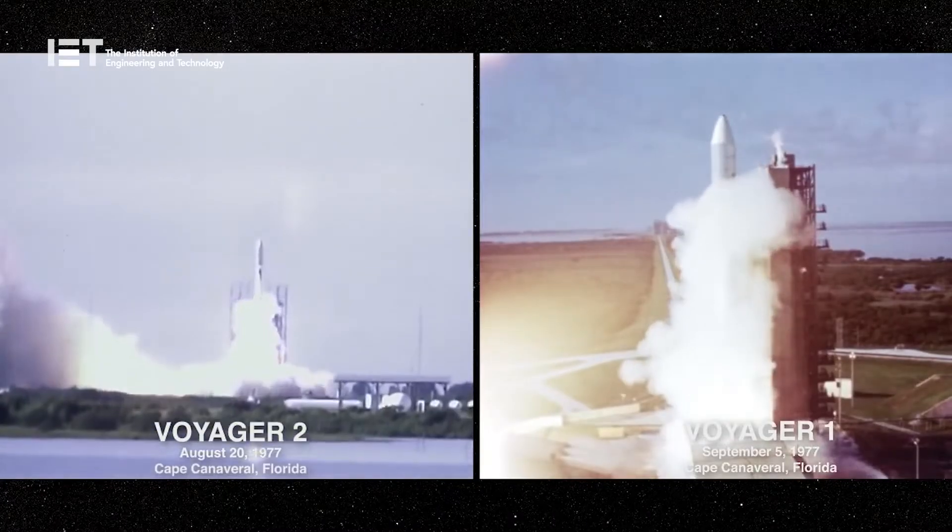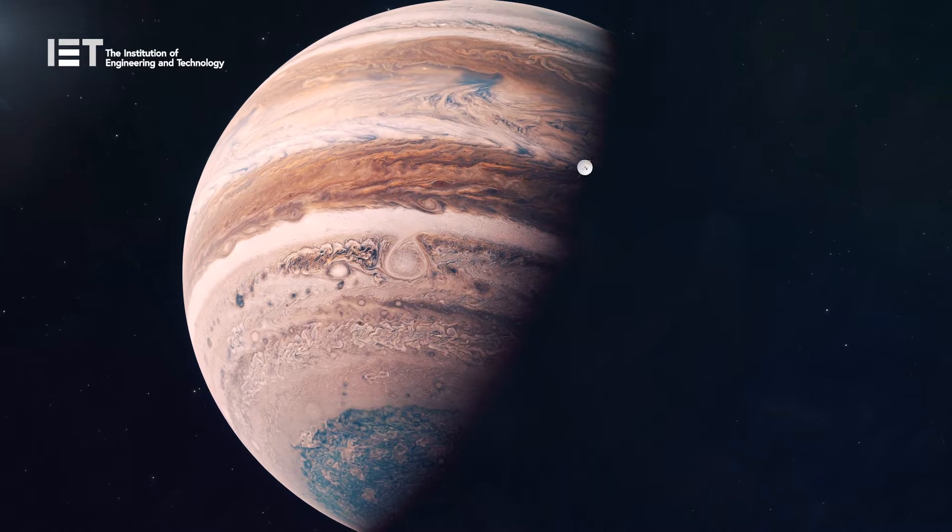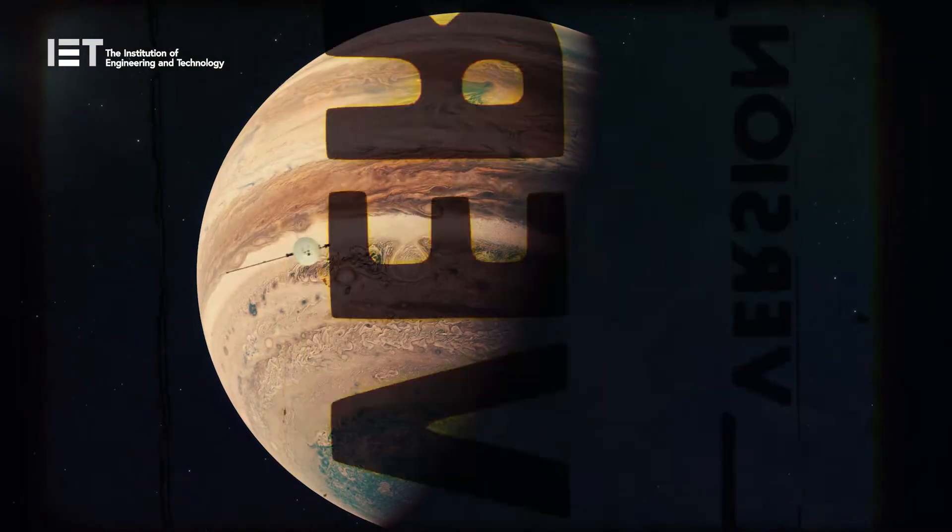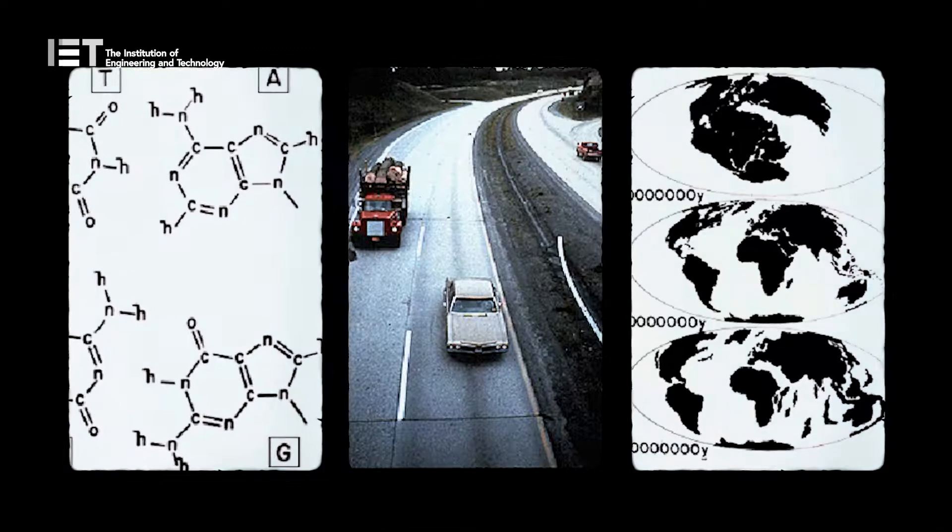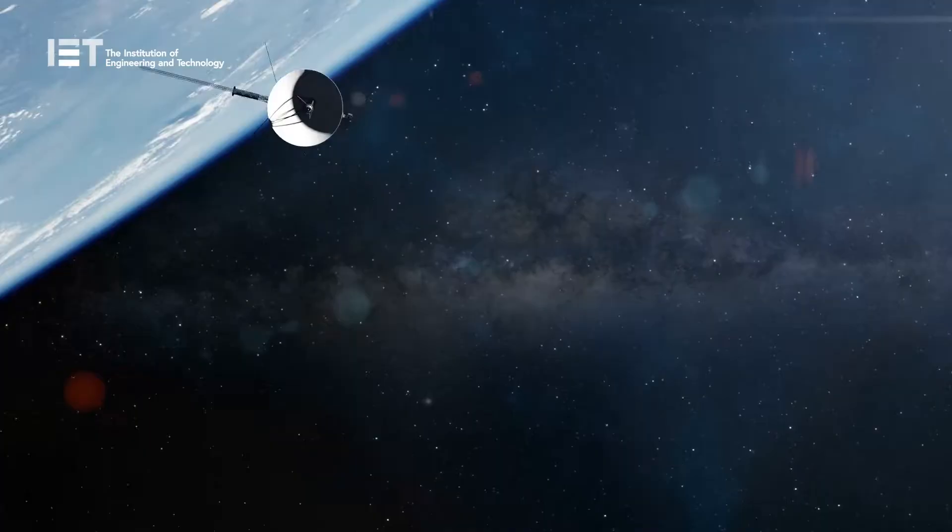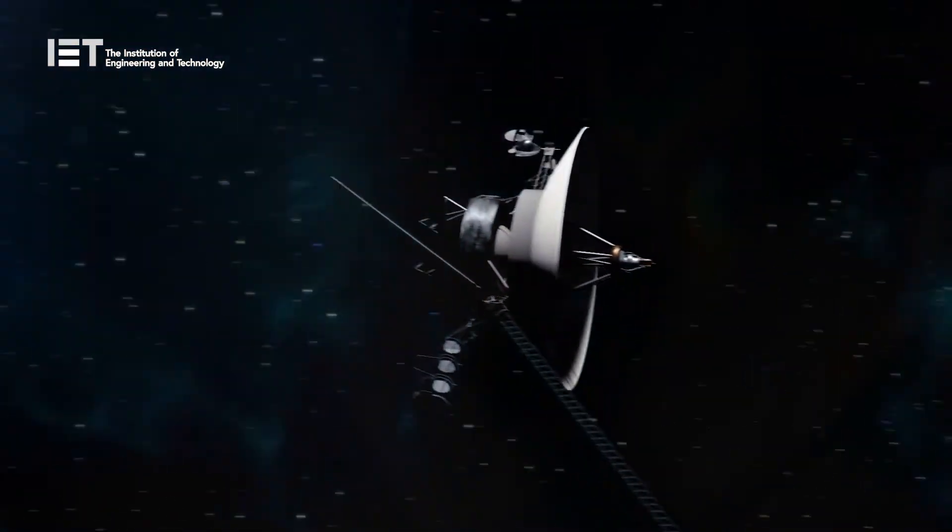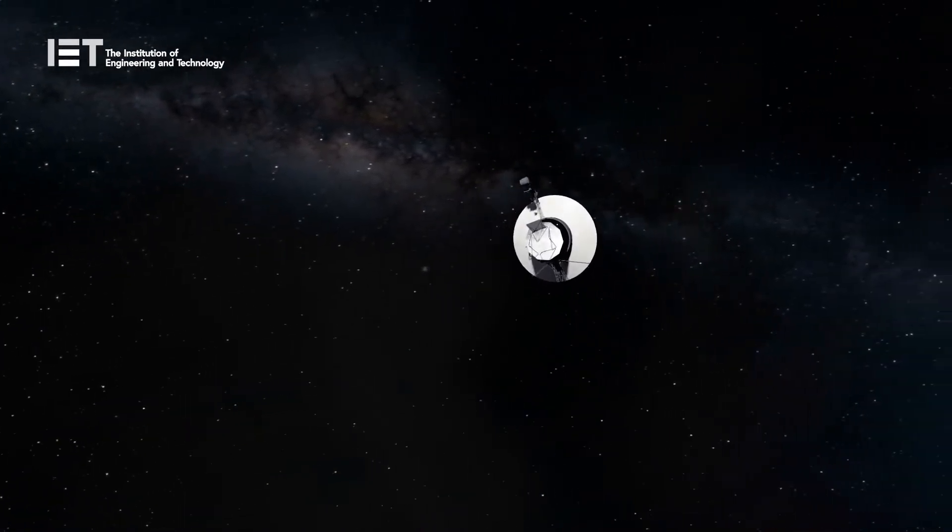In 1977, humanity launched a message in a bottle into the stars with no guarantee if our message would find anyone or if it could be interpreted by any civilization it found. We sent a collection of images, sounds, and information about our precious blue planet. This Noah's ark of mankind's culture could be our first message to an alien civilization and may even outlive our species.